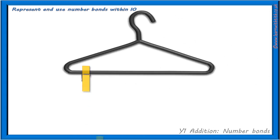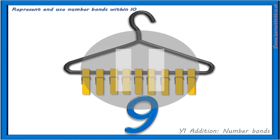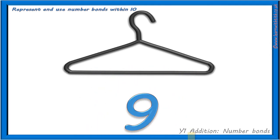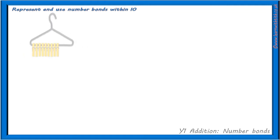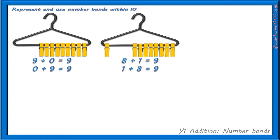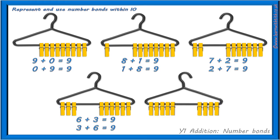What about 9 pegs? With 9 pegs, we discovered: 9 add 0 equals 9, 0 add 9 equals 9, 8 add 1 equals 9, 1 add 8 equals 9, 7 add 2 equals 9, 2 add 7 equals 9, 6 add 3 equals 9, 3 add 6 equals 9, 5 add 4 equals 9, and 4 add 5 equals 9.